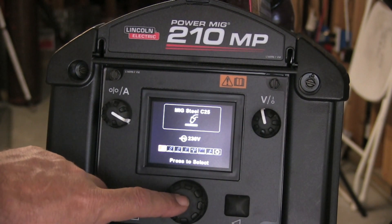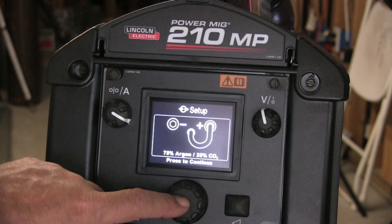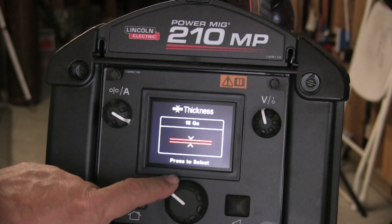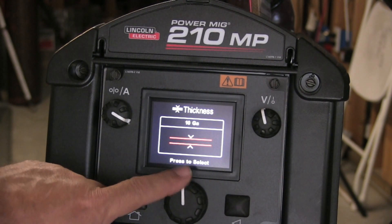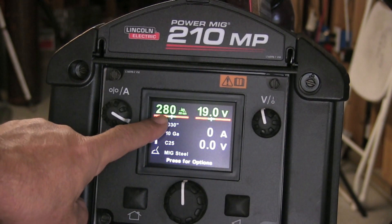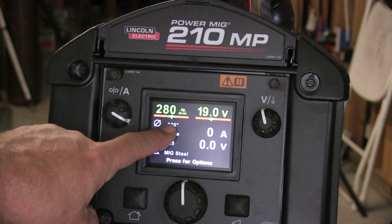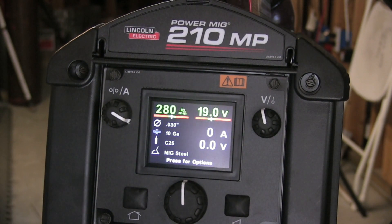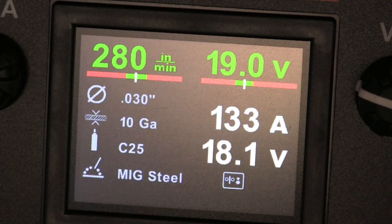This little power mig has a good little interface here. It kind of guides you through the setup where you basically select wire diameter and thickness of metal. And then it's got default parameters in there. The ones recommended for this thickness are 19 volts, 280 inches a minute using C25 gas.